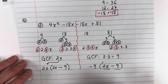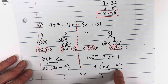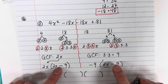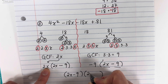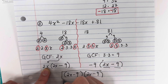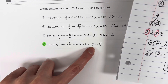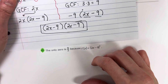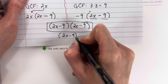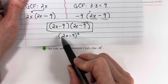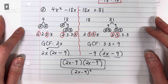The final step: both groups share the same factor (2x minus 9), so the factored form is (2x minus 9) times (2x minus 9), which equals (2x minus 9) squared. Comparing with the answer choices, the statement that f of x equals (2x minus 9) squared is true — confirming answer D. Thanks for watching! If you liked the video, please give it a like, leave a comment, and subscribe.